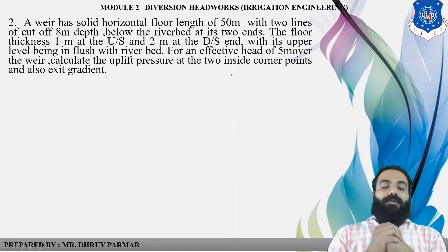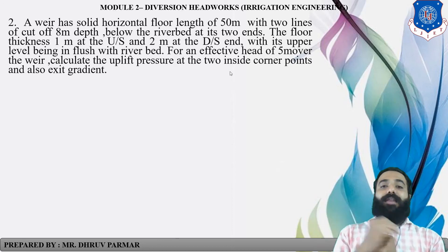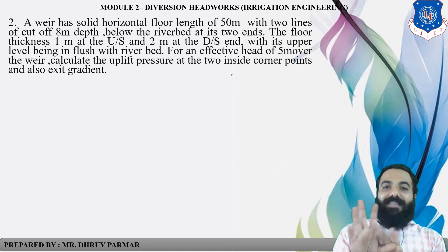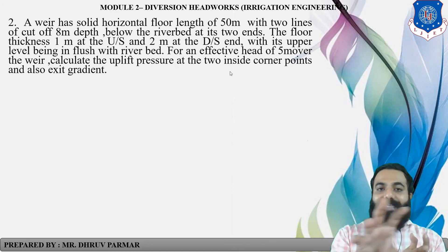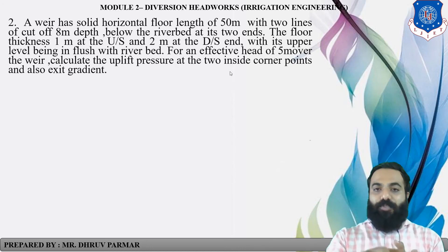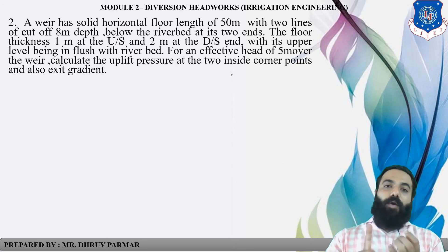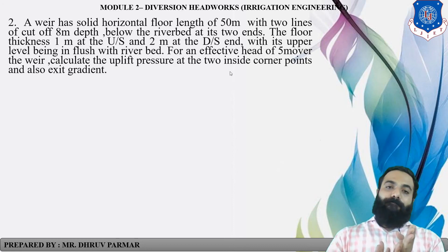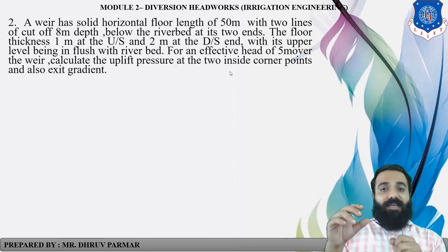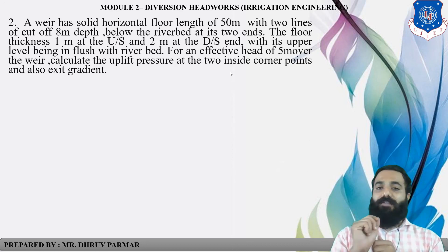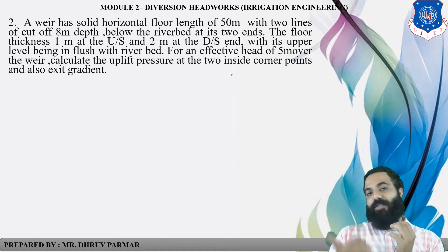The next example covers the combination of upstream side as well as downstream side, which will be discussed in the next session. In this case, we calculate both sides. We find pressure at each point E, D, and C. For the upstream side, the main points are C and D (D is common), and for the downstream side, the main point is E. Calculate phi_C and phi_E, then apply the two corrections: correction due to thickness and correction due to mutual interference. This gives the final uplift pressure for both upstream and downstream sides.